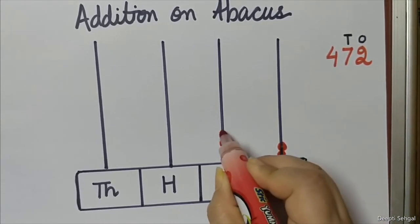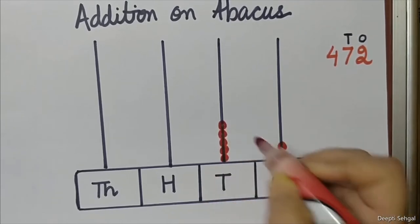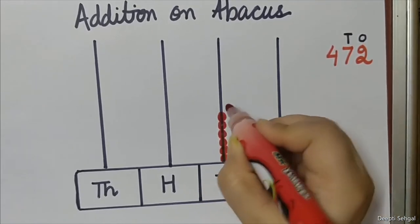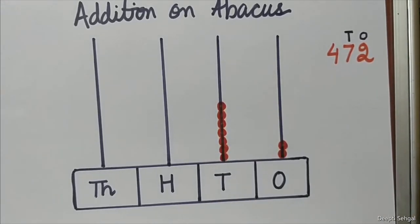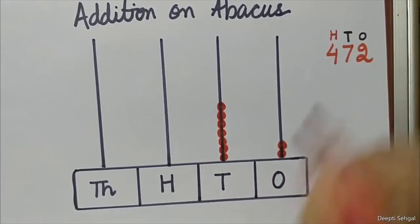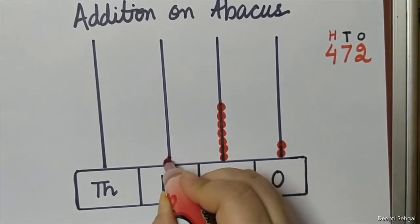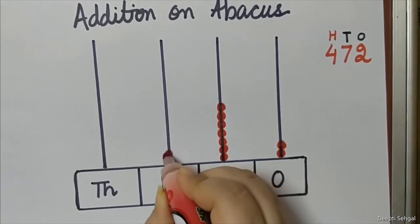And how many hundreds? How many hundreds do we have? 400. So 100, 200, 300, and this is 400.